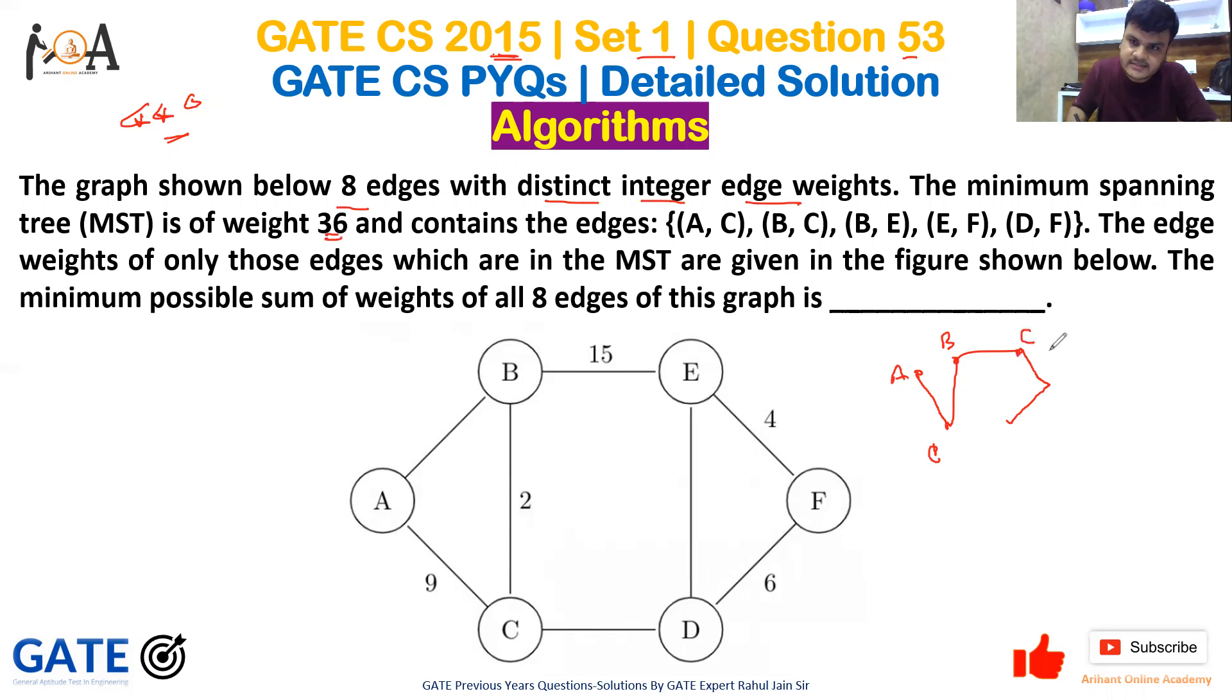So we have here A, here is C, here is B, here is E, and F, and D. This is our minimum spanning tree with weight 36.